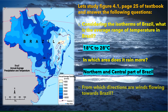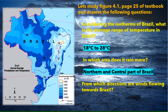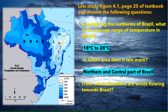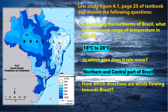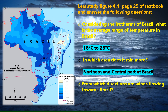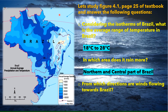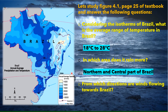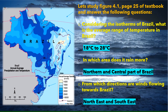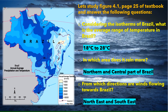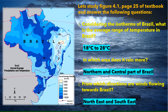Moving to the next question: from which directions are winds flowing towards Brazil? Looking at the map, the winds flow from the northeast and southeast directions, coming from the Atlantic Ocean. So the answer is that winds from the northeast and southeast directions are flowing towards Brazil.